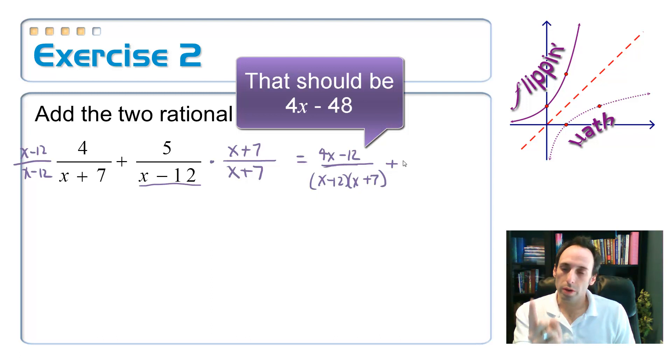Okay, and then across the top on the first fraction, just distribute it out. I'd have 4x minus 48 over, and don't factor this out or foil this out. Just leave it in factored form, x minus 12 times x plus 7. And then plus, now go ahead and distribute it along the top. The reason why I'm distributing it along the top but not the bottom is because we're going to have to add the tops, but I keep the bottoms the same.